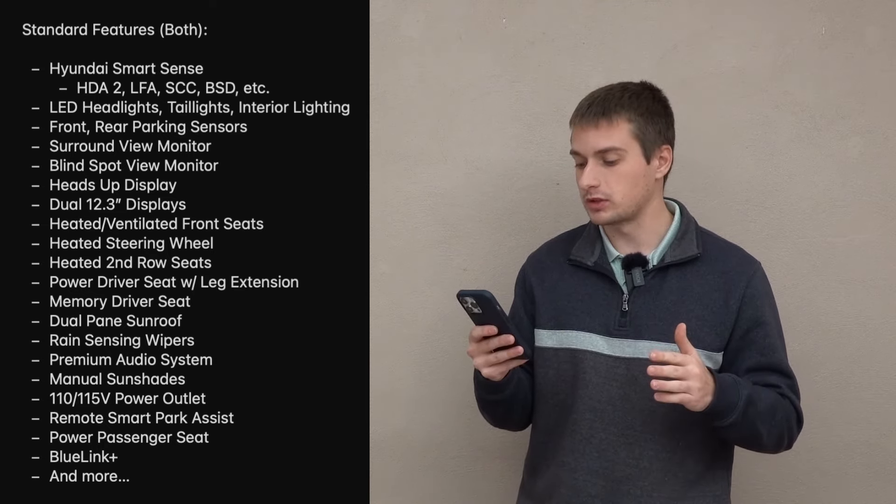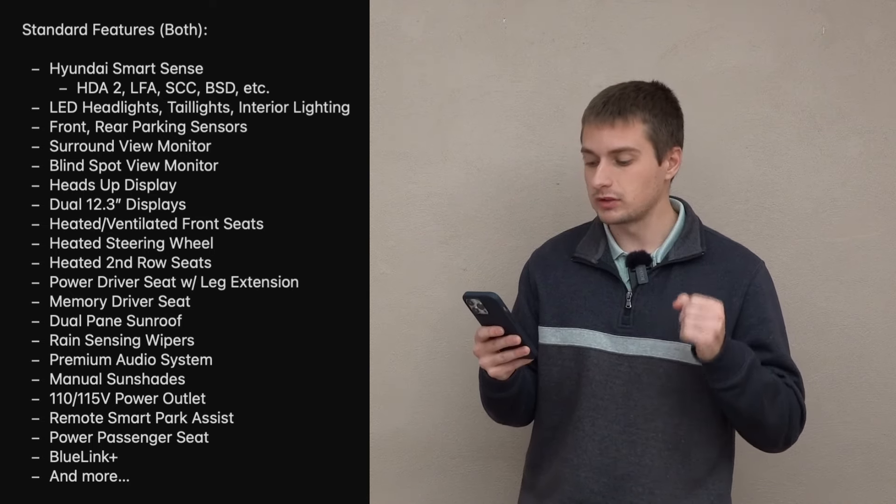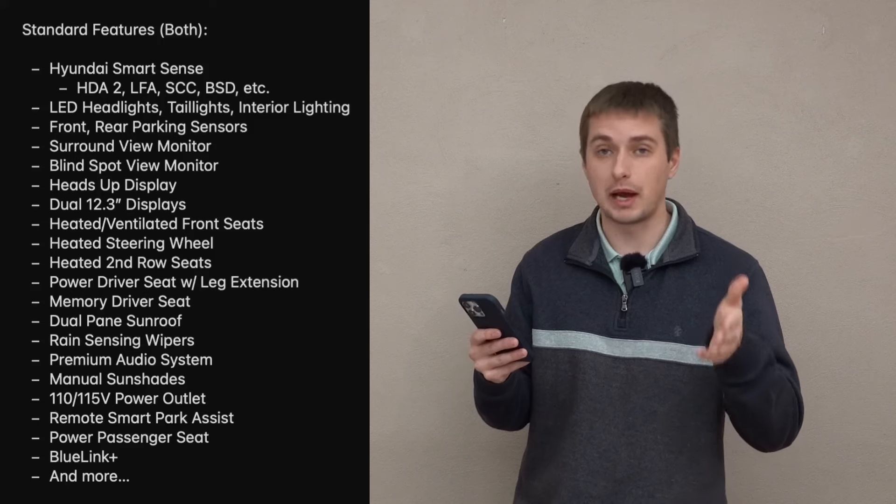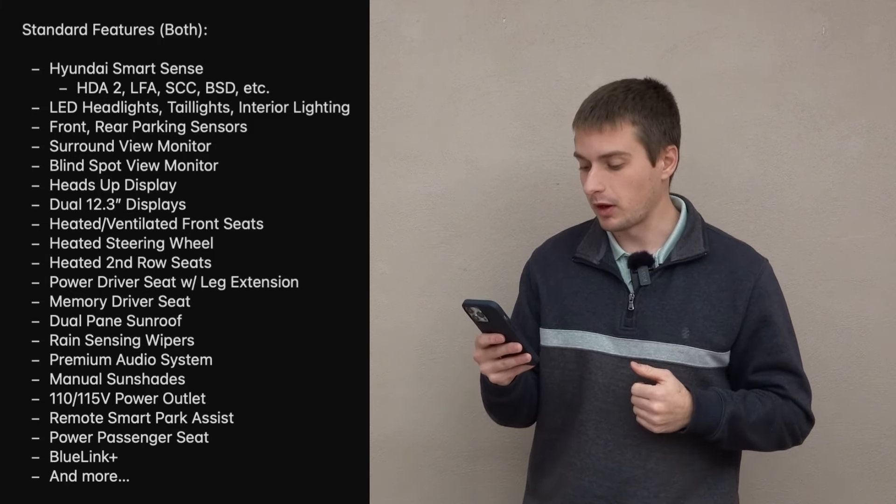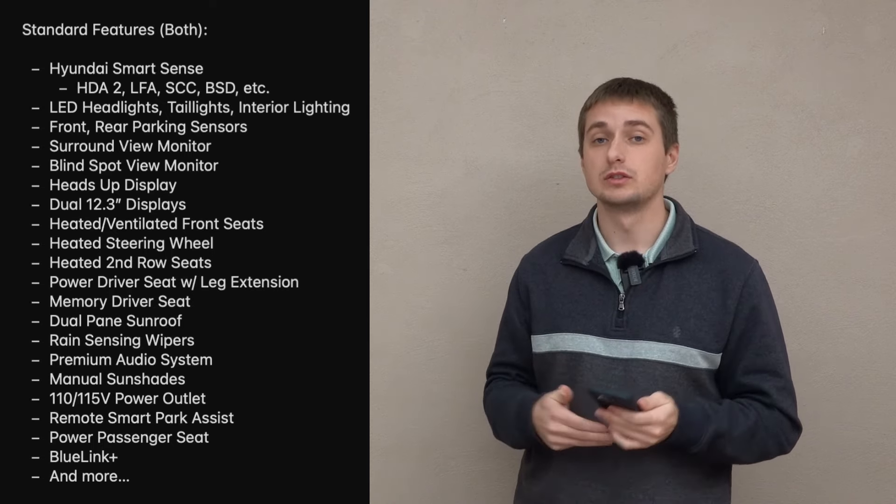Next, we have LED headlights, taillights, and interior lighting, front and rear parking sensors, surround view monitor with blind spot view monitor, heads-up display, dual 12.3-inch infotainment and gauge clusters, heated and ventilated front seats, heated steering wheel, and heated second row seats.